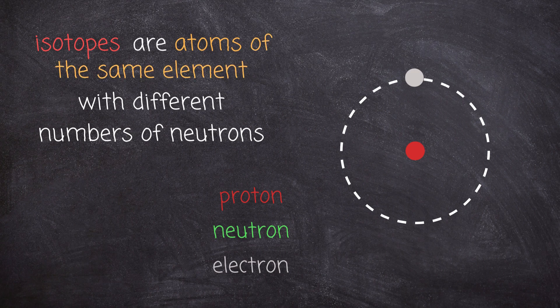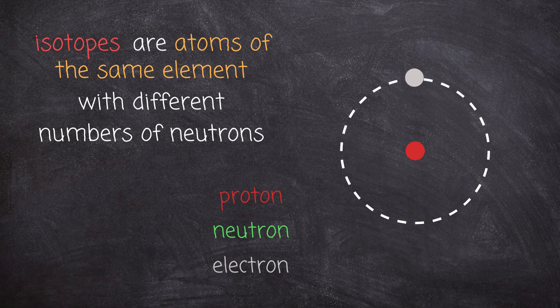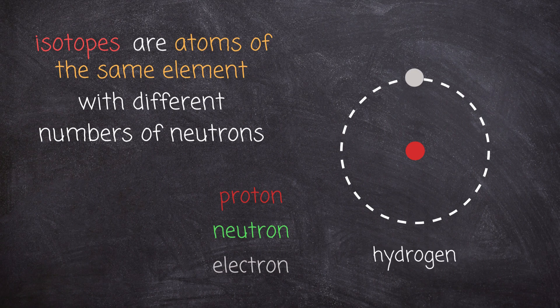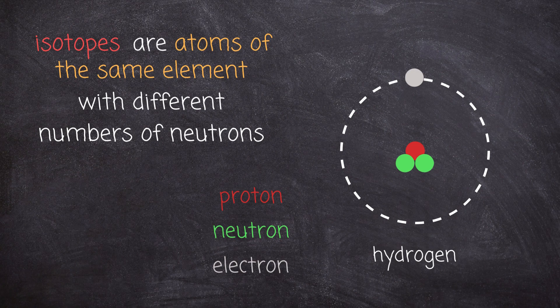In order for atoms to be of the same element, they should have the same number of protons. So an atom with one proton is always hydrogen, no matter how many neutrons it has. The difference in neutrons is what distinguishes one isotope from another.